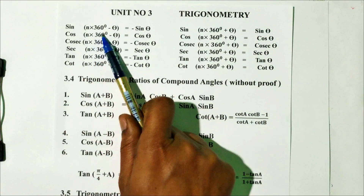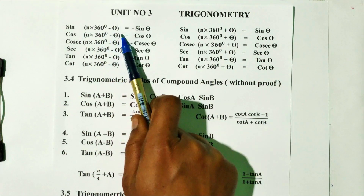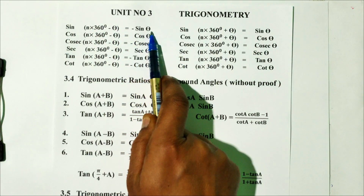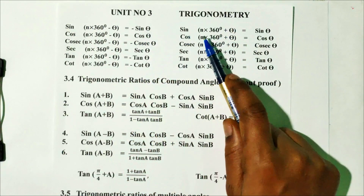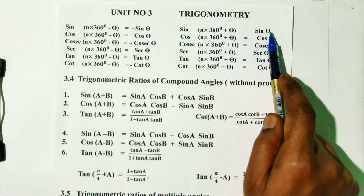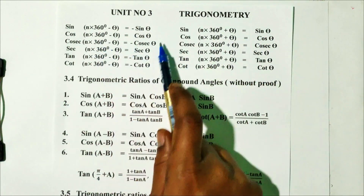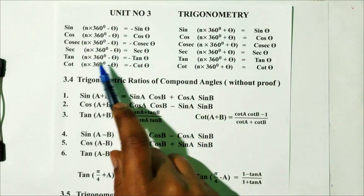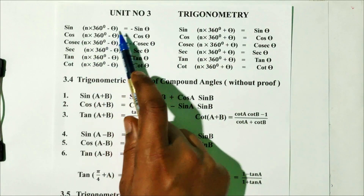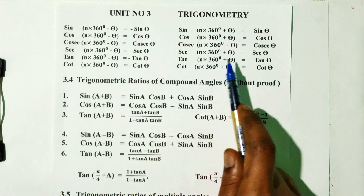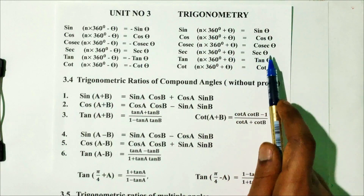sin(n × 360° − θ) = −sin θ, and sin(n × 360° + θ) = sin θ. These are important formulas in terms of n × 360° ± θ.